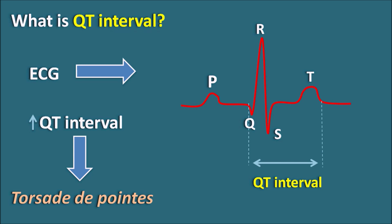By knowing this information, we can also check for drug interactions where few of the drugs can increase the QT interval and may precipitate this fatal torsades de pointes. In this video, we will go through a list of drugs which increase the QT interval, how this QT interval is going to be raised, what mechanisms are involved, and which types of drugs are responsible for raising the QT interval.